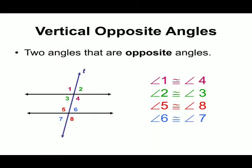Vertically opposite angles: two angles that are opposite are called vertically opposite angles. Here two lines and transversal T are shown. Angle 1 and angle 4 are equal and form a pair of vertically opposite angles. Next pair is angle 2 and angle 3. Another pair is angle 5 and angle 8, so their measurements will be equal. Similarly, angle 2 and angle 3 will also be equal. The last pair is angle 6 and angle 7. So there are four pairs of vertically opposite angles.